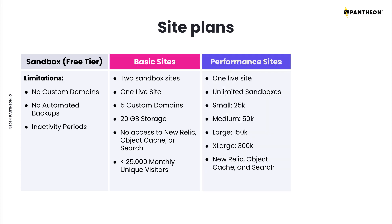Professional sites that typically outgrow basic site plans can move to performance plans. Performance plans provide a range of resources for sites that have higher traffic and greater importance to the business. All performance plans provide access to New Relic, Object Cache, and Pantheon Search. Performance plans come in sizes that correspond with expected traffic figures: Performance Small is for less than 25,000 monthly unique visitors, Performance Medium for less than 50,000, Performance Large for less than 150,000, Extra Large for less than 300,000, and 2XL for less than 600,000 monthly unique visitors.